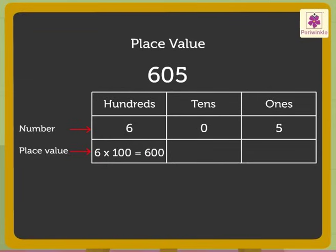The place value of number 0 is 0 as there are zero tens. The place value of number 5 is 5 into 1. That is, 5.